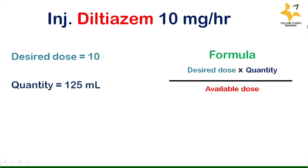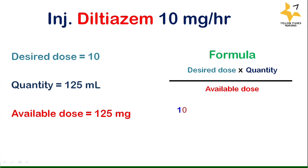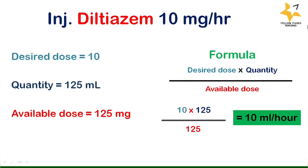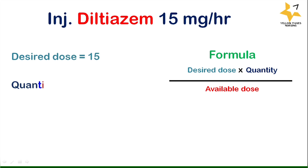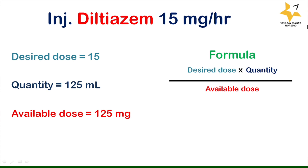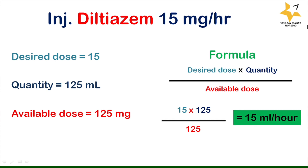Applying the formula for 10 mg per hour, the answer is 10 ml per hour. Next example: injection diltiazem 15 mg per hour. Desired dose is 15, quantity is 125 ml, available dose is 125 mg. Applying the formula, the answer is 15 ml per hour.